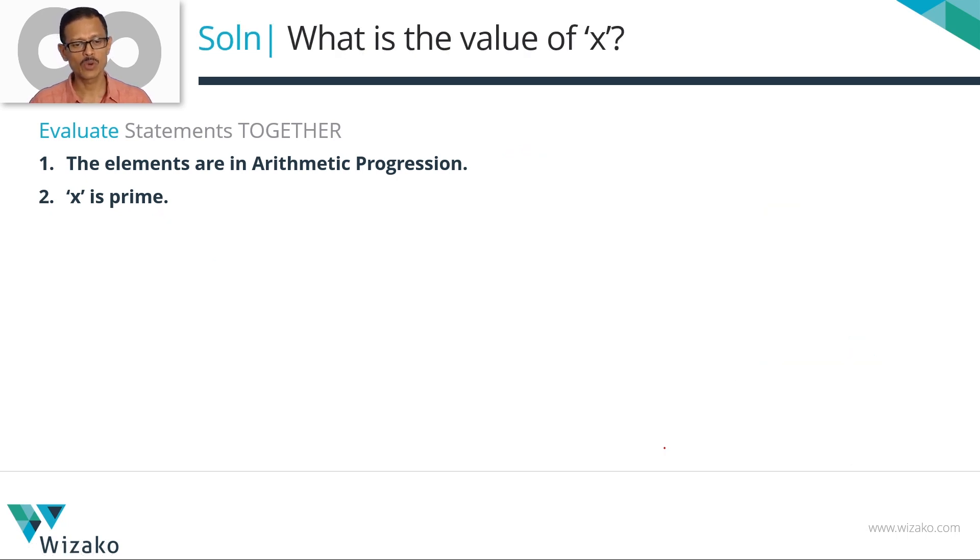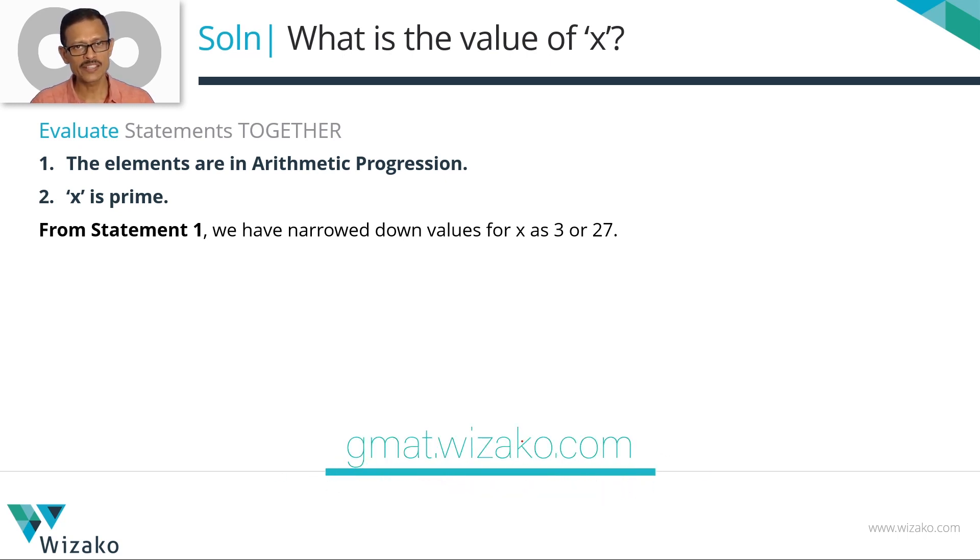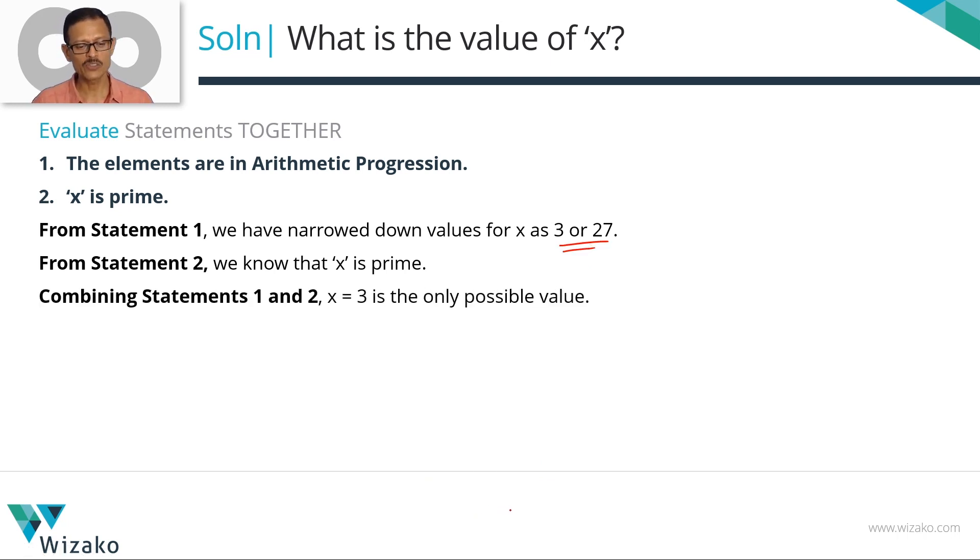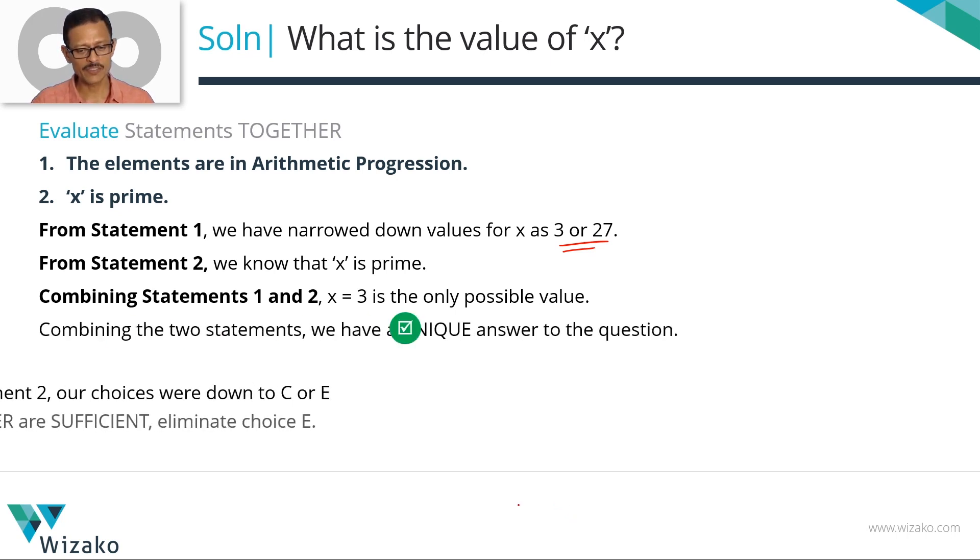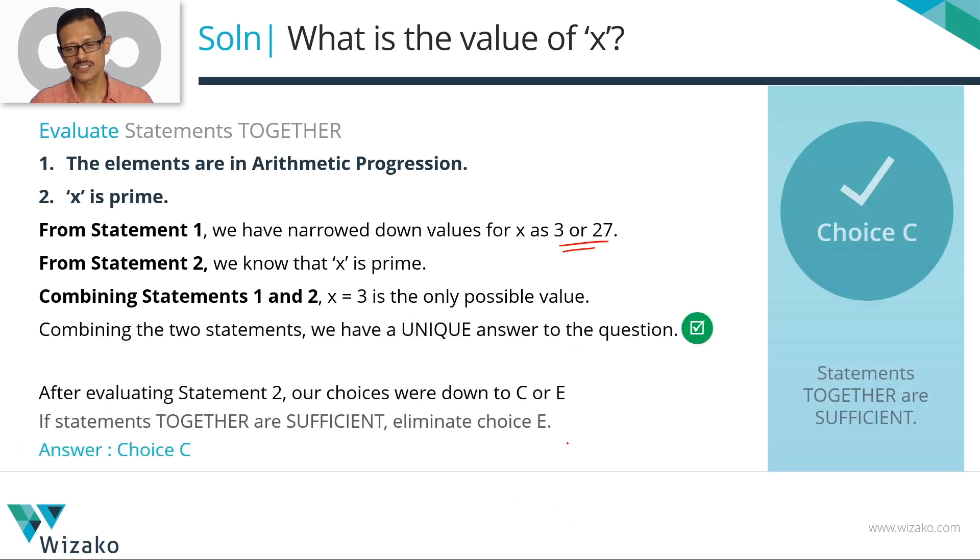Summarize it before we move on. From statement 1, we know that x could take exactly two values, 3 or 27. Statement 2 says that it's a prime number. If x is a prime between these two, which is prime? 3 is prime. 27 is not prime. So we can deduce a unique value for x that it is equal to 3. Statements together are sufficient. So let's eliminate choice E. Choice C is the correct answer.